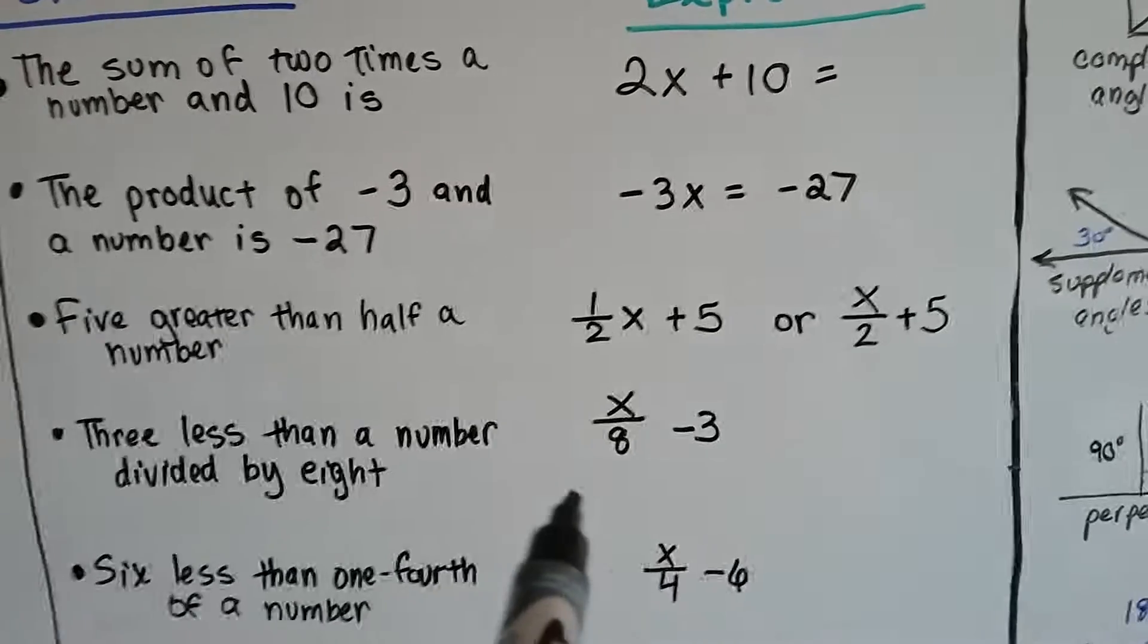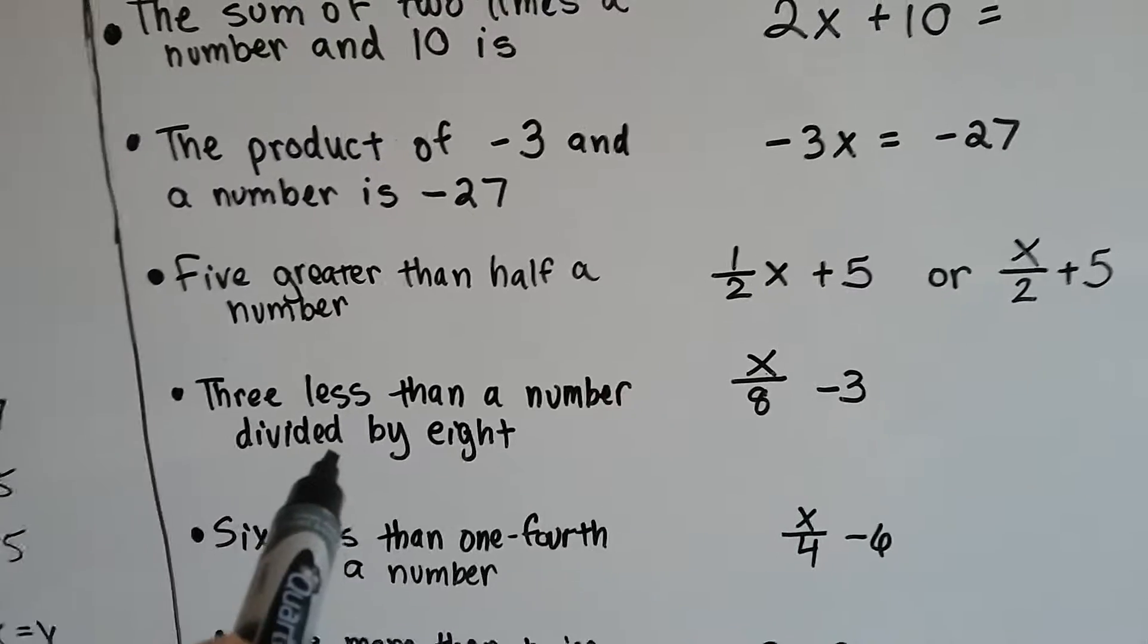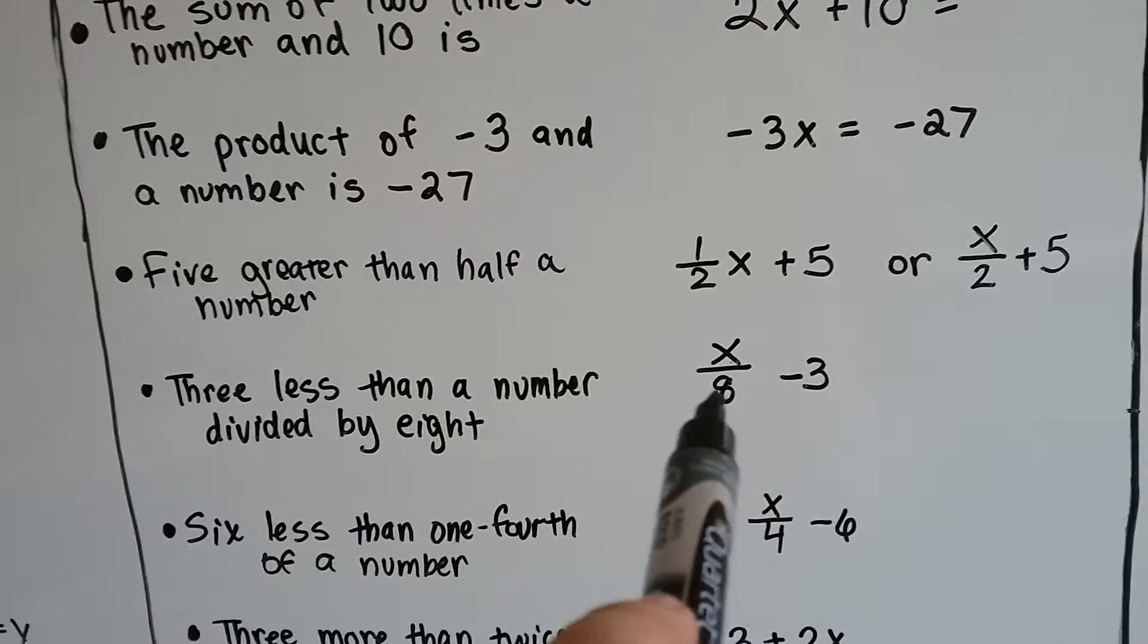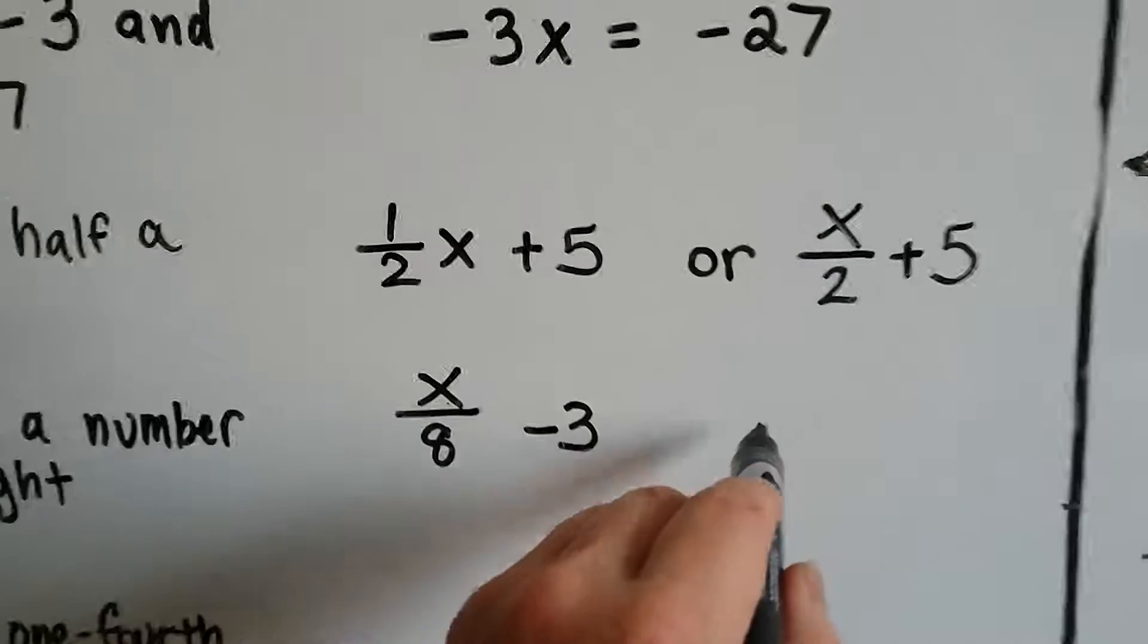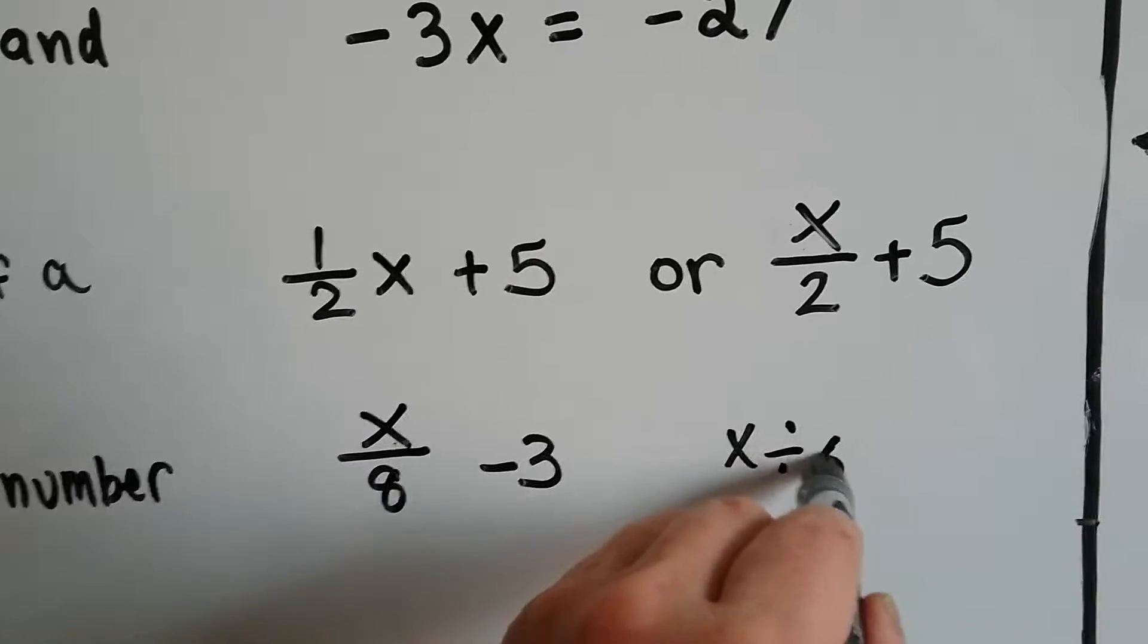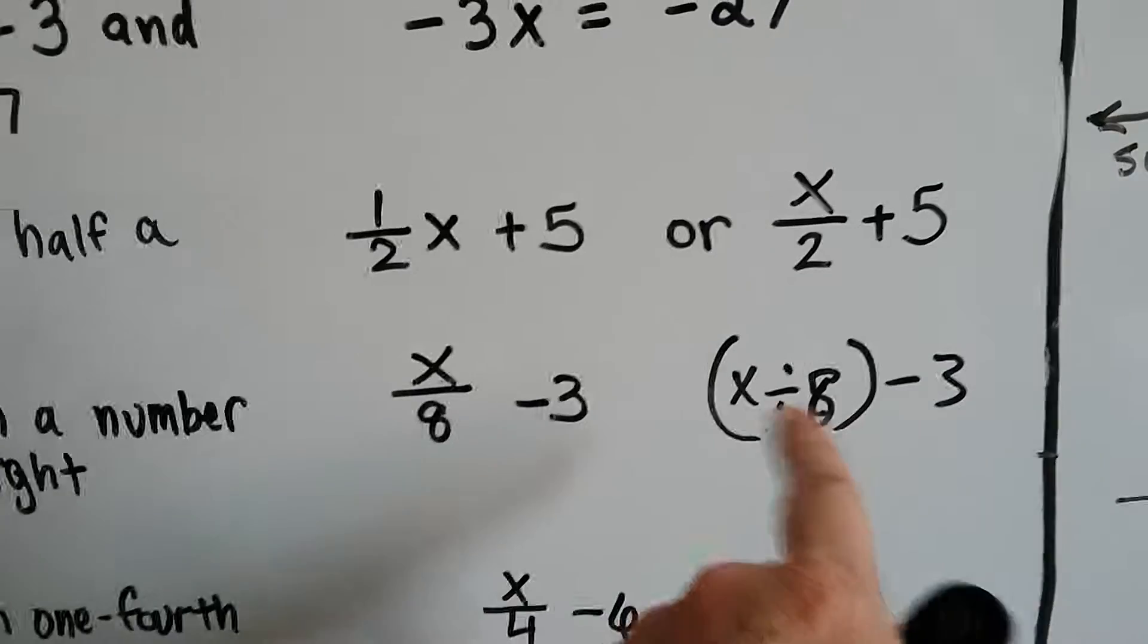If it says 3 less than a number divided by 8, then we need to have that number x divided by 8, and then we need to take away 3. We also could have done x divided by 8 and then minus 3. We could have written it this way.